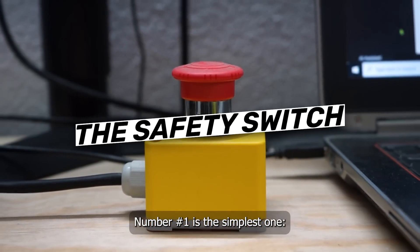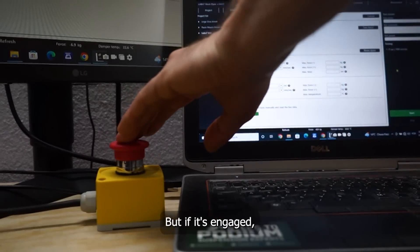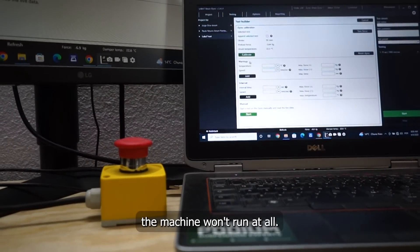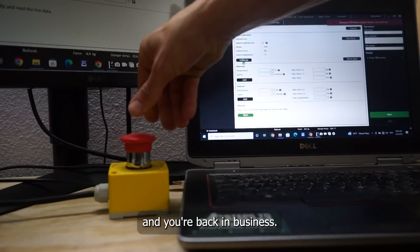Number 1 is the simplest one, checking the safety switch. The emergency stop button on the dyno is a built-in safety feature, but if it's engaged the machine won't run at all. Sometimes we accidentally press it, so twist and release and you're back in business.